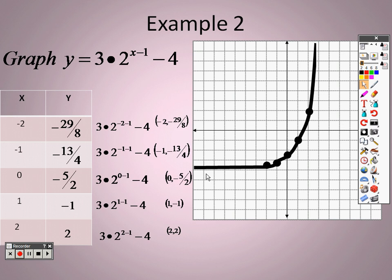The asymptote here is y equals negative 4. Look at the graph — right here at the end there is a minus 4. In all the other problems, we didn't have a constant term by itself, and each time we had no constant or 0, our asymptote was at y equals 0. Since we have a minus 4 hanging out by itself, that line is your asymptote. Y equals negative 4 is your asymptote. Whatever the number is out there, that's your asymptote.